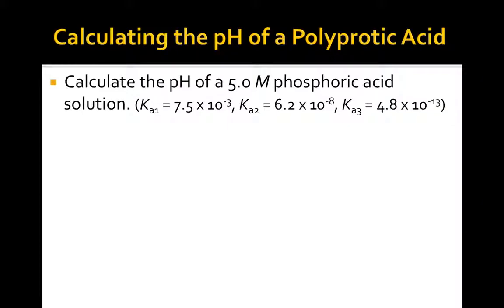With these listed Ka values, calculate the pH of a 5.0 molar phosphoric acid solution. Start by listing the major species in solution. Since this is a weak acid, water and phosphoric acid molecules are the major species.